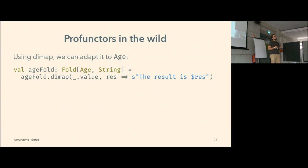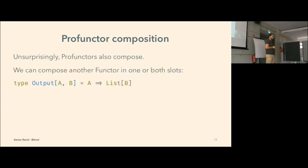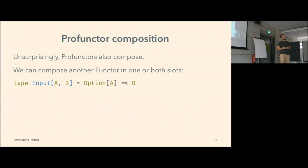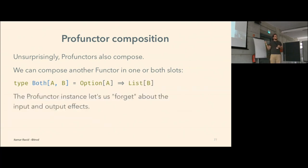Unsurprisingly, profunctors also compose. A function from A to List of B is a profunctor because a function is a profunctor with a covariant functor composed on the right-hand side — you might recognize this as a Kleisli arrow. We can also compose a covariant functor on the left type parameter and use `dimap` to adapt the function, completely ignoring the fact that there is an option there. And we could compose covariant functors on both type parameters and still use `dimap`, just providing functions that work on A and B. In fact, any function between two functors is a profunctor as well.